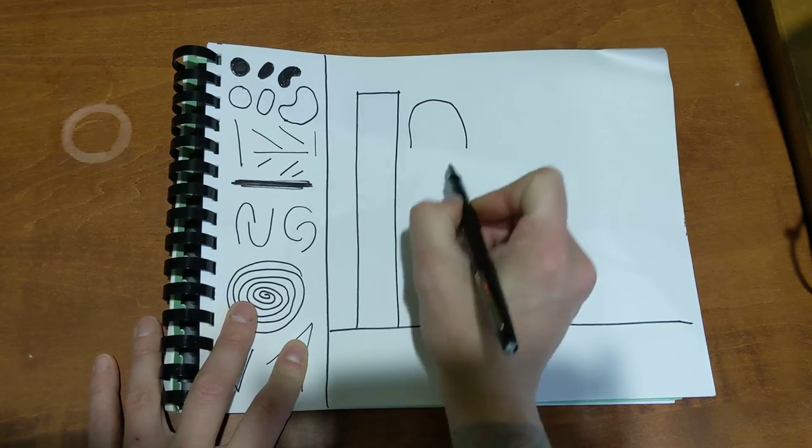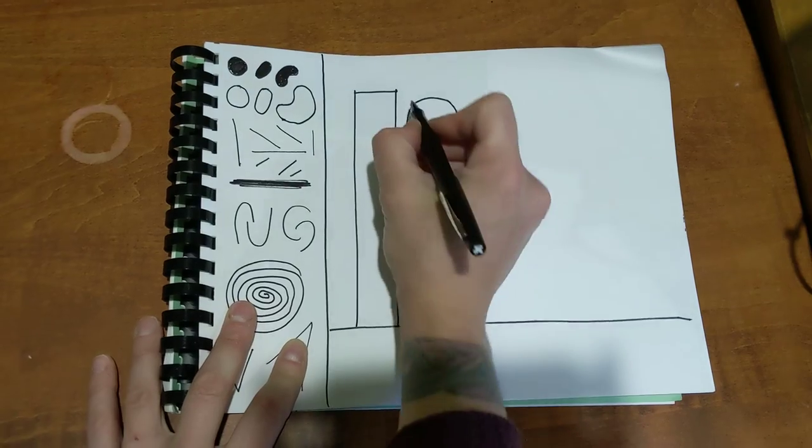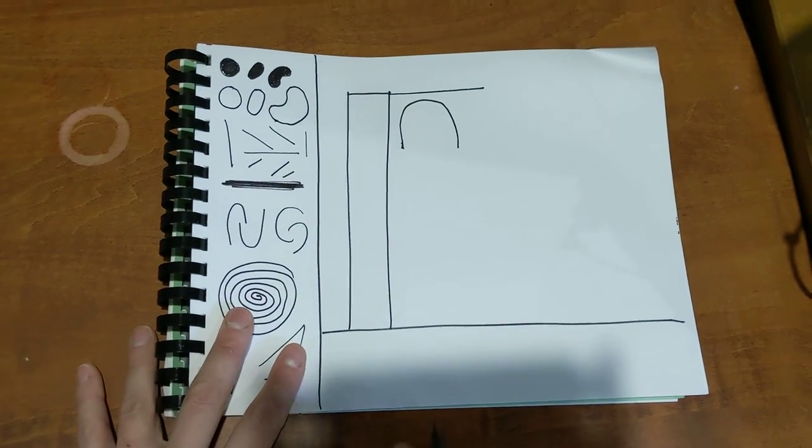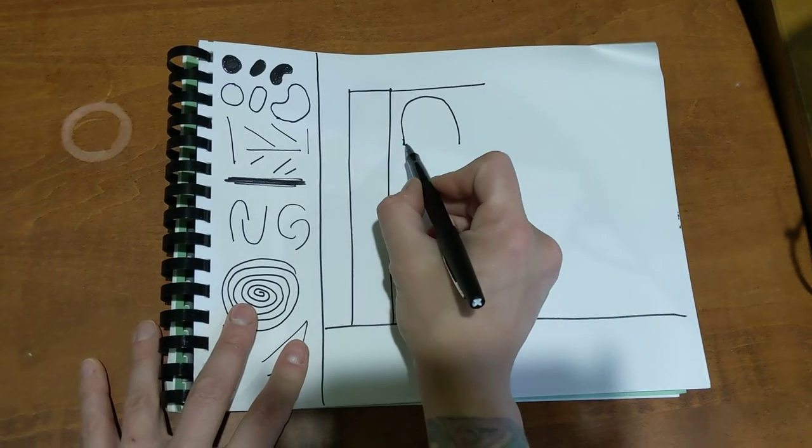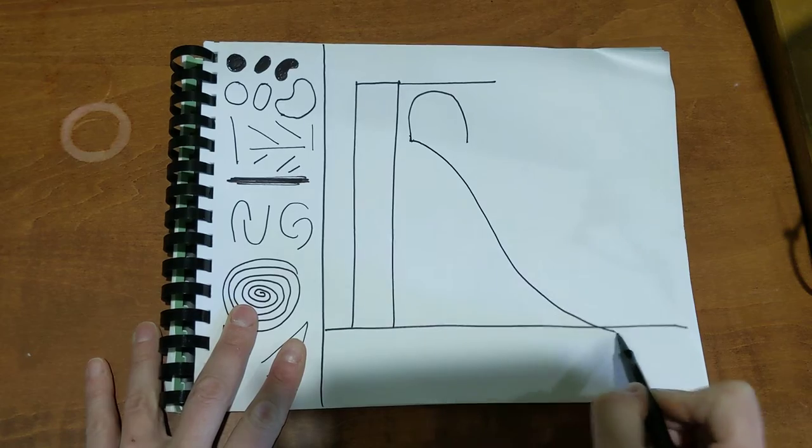And that is going to be the door for the cars to come out of. And then here is the roof of the garage. So the cars come out of here and they go down a slide. I'm going to do like this curved line, curved line.